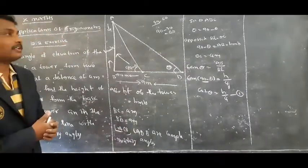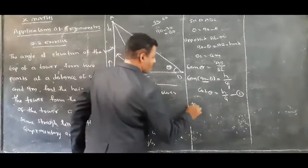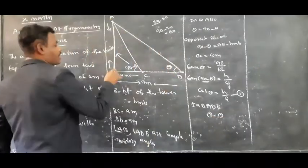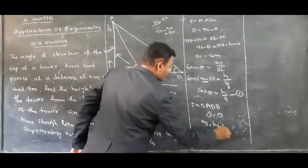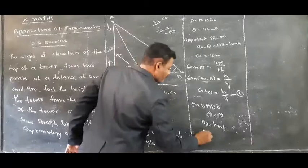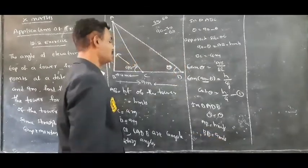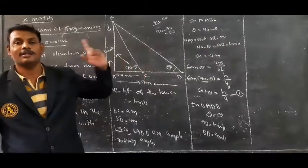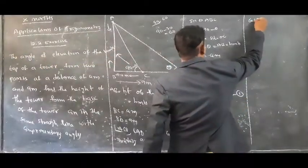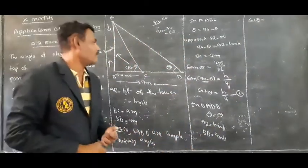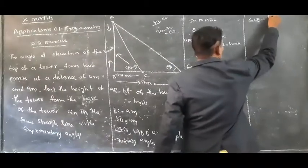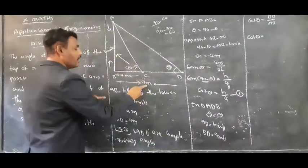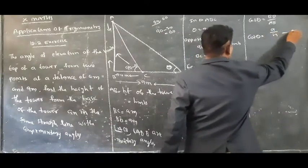Now I am going to take triangle ADB. In triangle ADB, the angle at D is theta. The opposite side is AB, equal to H meters, and the adjacent side BD equals 9 meters. From the first equation I know the value of cot(theta), so here also I use cot(theta). Cot(theta) equals adjacent side BD over opposite side AB, which gives cot(theta) equals 9 over H. Let this be the second equation.